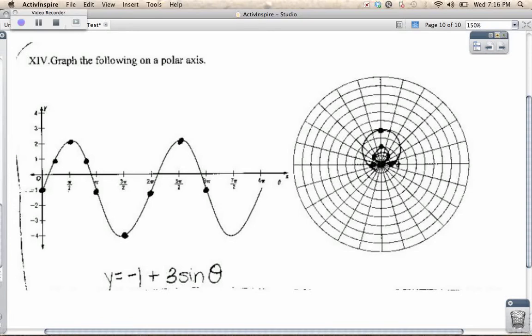If you want to find the equation, you look for the midline, which in this case is negative 1. You look for your amplitude, which is half of the height of the graph. This whole height of 6, so from negative 4 to 2 is 6.